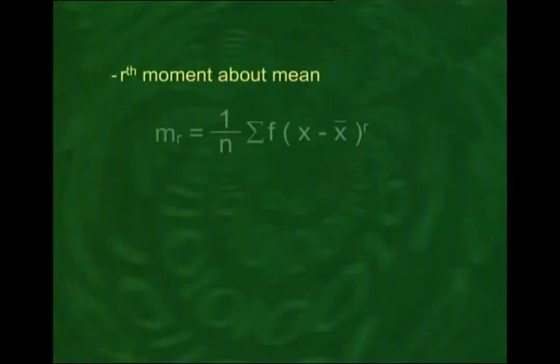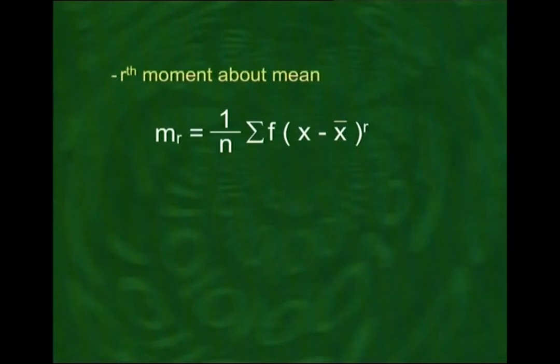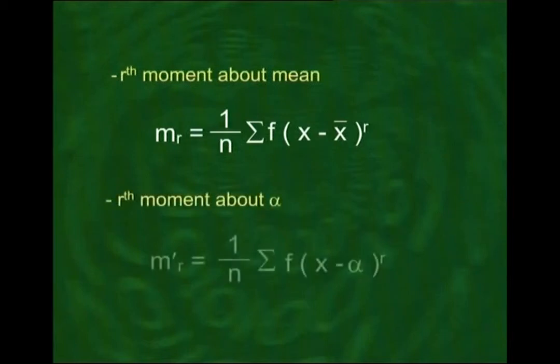For grouped data, the formulae are very similar to raw data, with the only difference being that frequency f is inserted. The rth moment about the mean is σf(x − x̄)^r / n, and the rth moment about alpha is σf(x − α)^r / n. In the case of a frequency distribution of a continuous variable, x represents the midpoints of the classes.